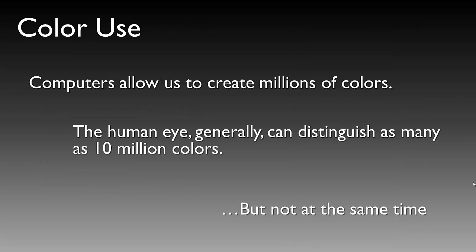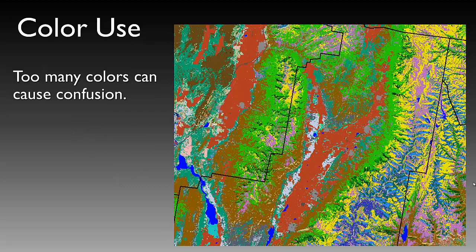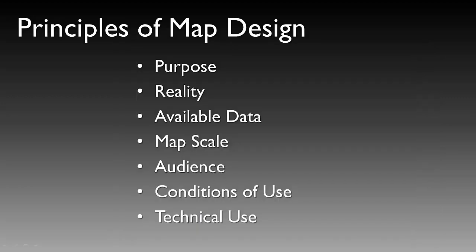An important topic that needs careful consideration is the use of color. Computers allow us to create millions of colors and the human eye can generally distinguish nearly ten million colors, but not at the same time. Too many colors can cause confusion, as seen in a land cover map example. A well-designed map will use the appropriate number of colors for the size and scale of the map being displayed.